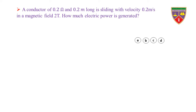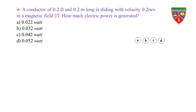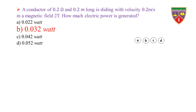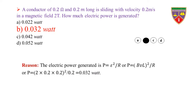Question: A conductor of resistance 0.2 Ω and length 0.2 m is sliding with velocity 0.2 m/s in a magnetic field of 2 T. How much electric power is generated? Option A: 0.022 W, option B: 0.032 W, option C: 0.042 W, option D: 0.052 W. The key is 0.032 W, therefore the correct option is B. Reason: P = ε²/R = (BvL)²/R = (2 × 0.2 × 0.2)²/0.2 = 0.0064/0.2 = 0.032 W.